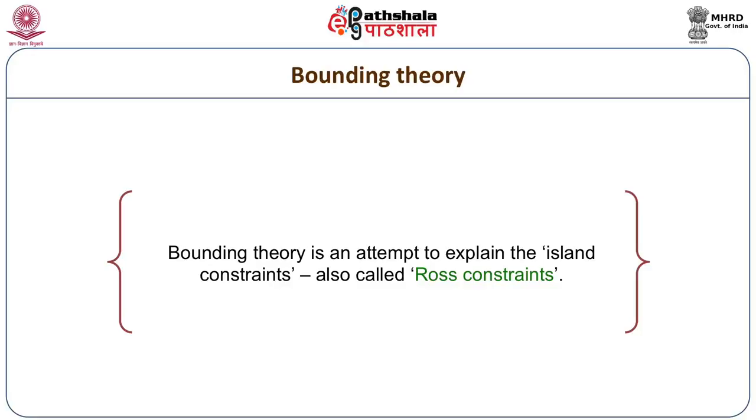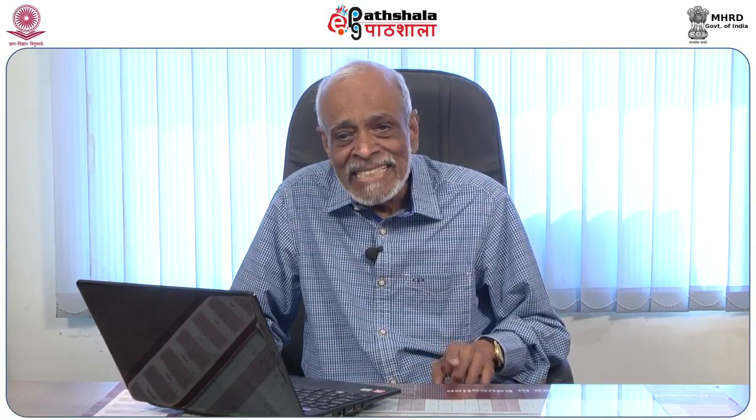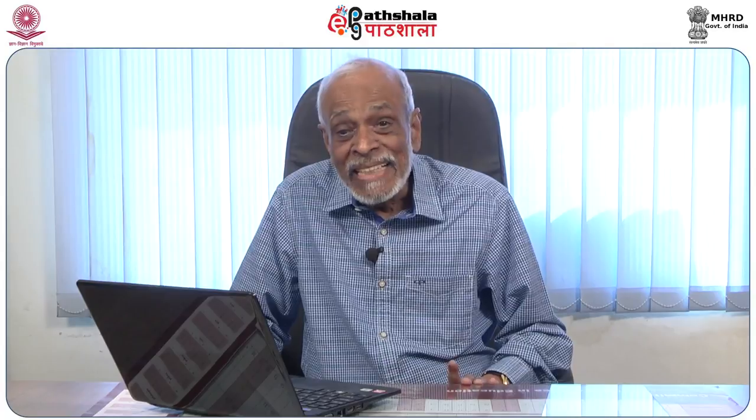In this particular unit, we will look at the first two modules of UG, namely bounding theory and government. Bounding theory is an attempt to explain the island constraints. You will recall that in the last unit on GB, we talked about islands — certain syntactic configurations from within which it was not possible to extract a phrase. We listed two such islands: the complex NP and the WH island.